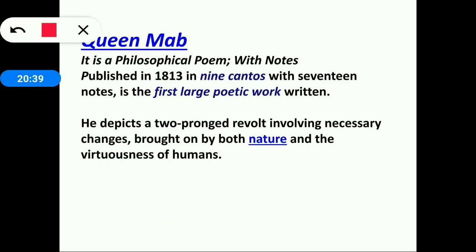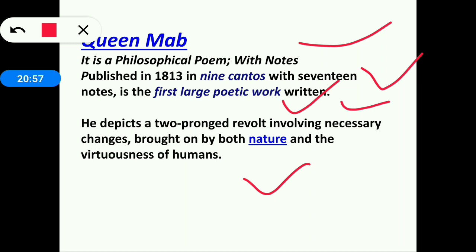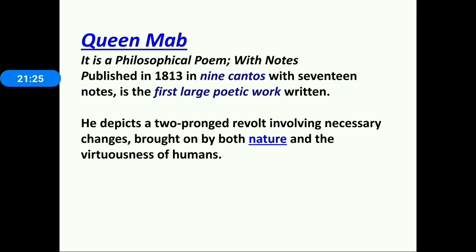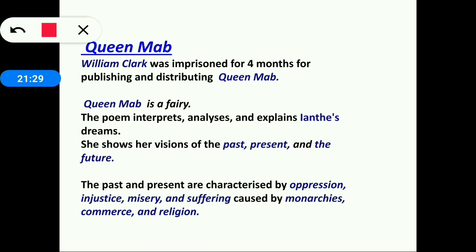Queen Mab is a philosophical poem with notes, published in 1813 in nine cantos with 17 notes. It is the first large poetic work of P.B. Shelley. He depicts a two-pronged revolt involving necessary changes brought about by both nature and the virtuousness of human beings — change can occur through nature and by the willingness of human beings.